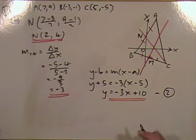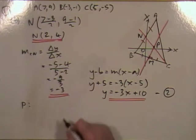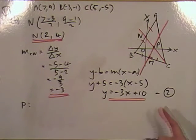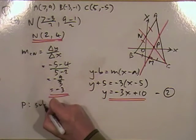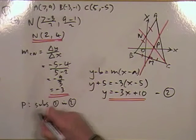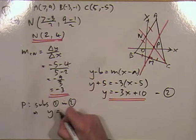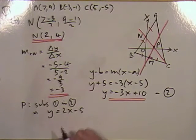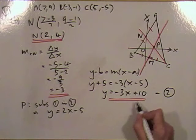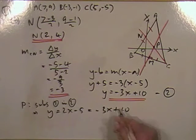To find the point of intersection — I'll call it P — I'm going to substitute equation 1 into equation 2. Equation 1 was y equals 2x minus 5, so substituting that in: 2x minus 5 equals negative 3x plus 10.